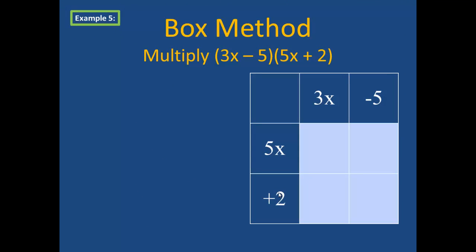In using the box method, what we're going to do is first multiply 5x times 3x to get 15x squared. We're then going to multiply 2 times 3x to get 6x. Next is 5x times negative 5 to get negative 25x.